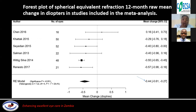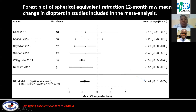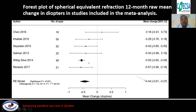Another forest plot shows the spherical equivalent refraction 12-month mean change in diopters. There was a negative 0.44 delta change, with a confidence interval ranging from negative 0.61 at 95% confidence interval. Here again, there was not a very big variation in the studies included. Of all the studies, the study by Rittig and colleagues 2014 had a greater weighted value, as shown by its larger square, in comparison to the other studies.